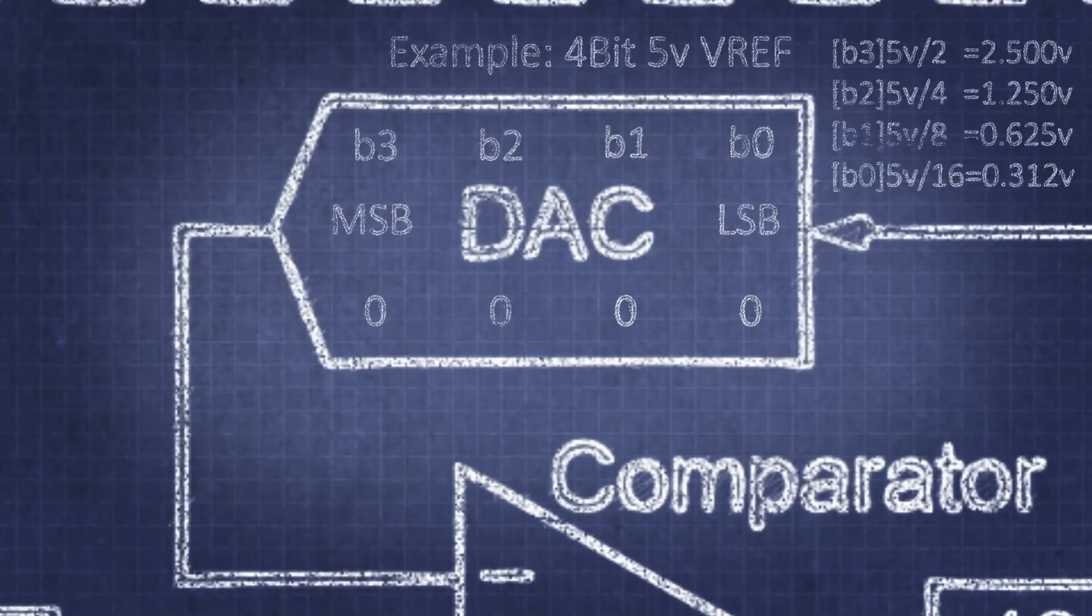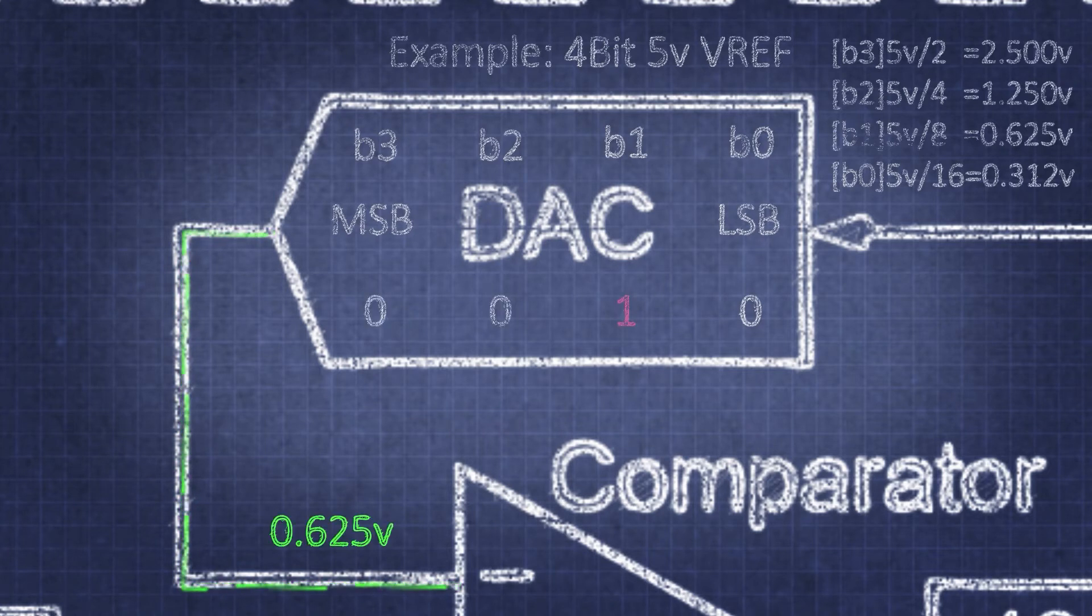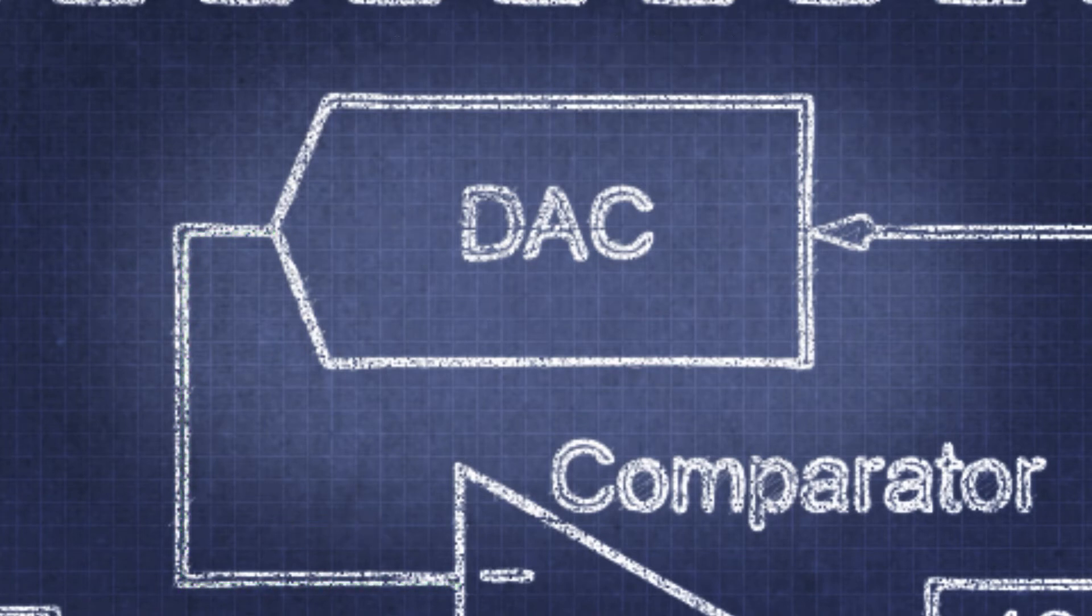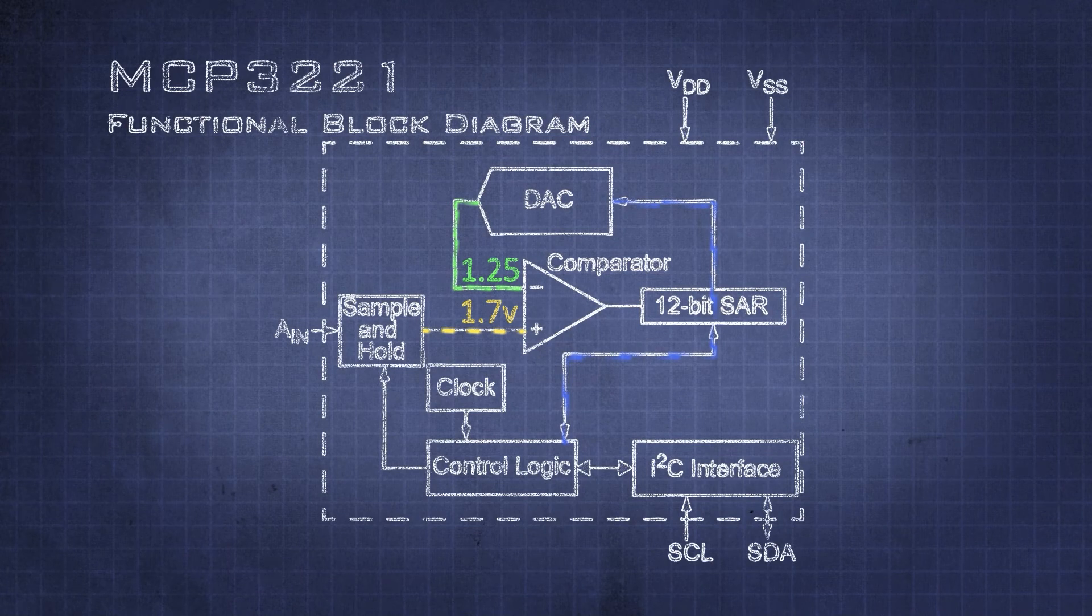By stepping down each bit of the DAC and running the comparison, we can binary search what the input voltage is based on the resulting combination of bits the DAC is set to at end of conversion. In this example, the next bit represents one quarter of the DAC's reference voltage.